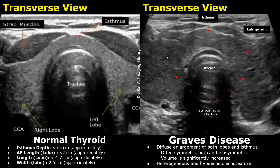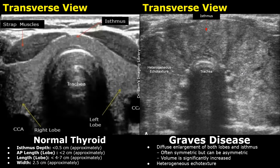The enlargement is usually symmetric, but it can be asymmetric in some cases. Here is another case showing an enlarged thyroid gland with a heterogeneous echo texture. This enlargement is more severe than the previous case. This thyroid is heterogeneous, but not really hypoechoic, so this type of appearance can also occur. The isthmus is very thick, and so are the right and left lobes.